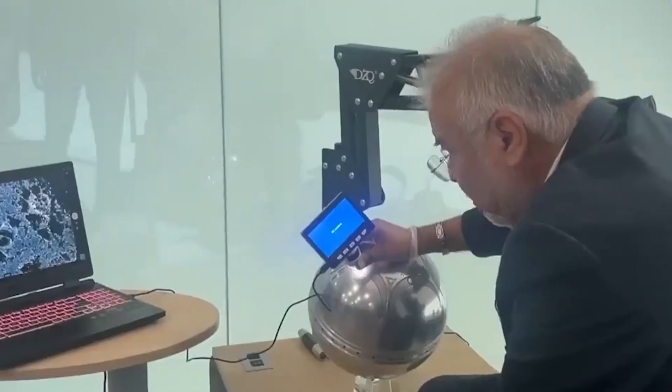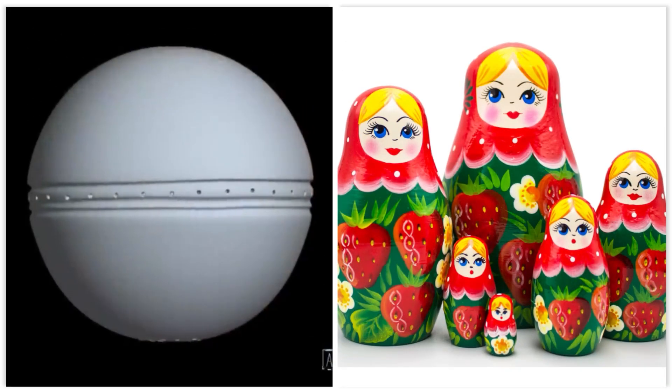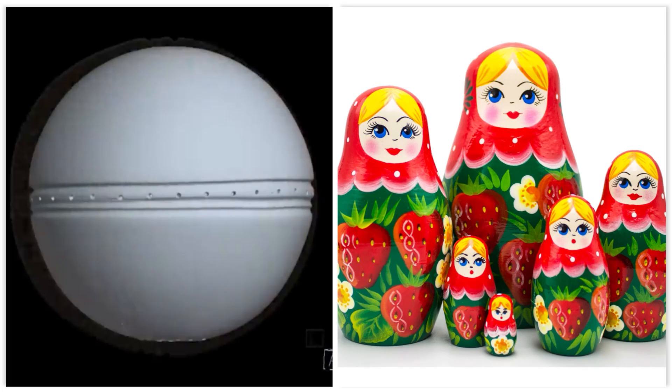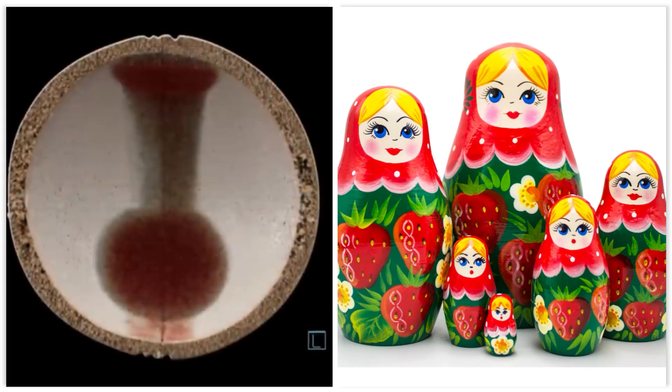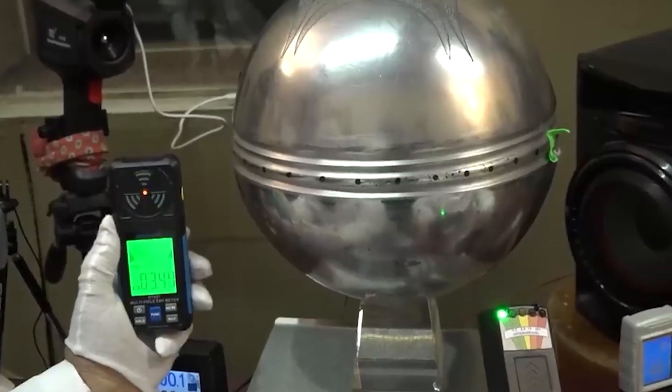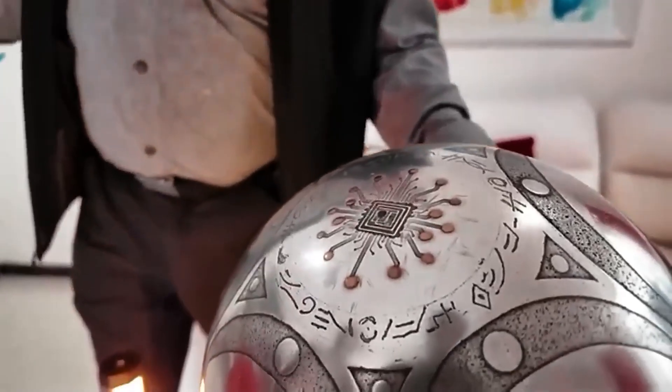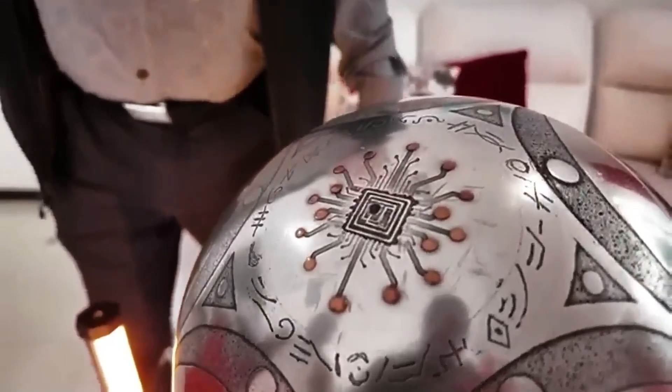But the scans revealed something even weirder. Inside the outer shell were two more shells, nested perfectly like Russian dolls. Between these layers floated nine tiny microspheres, held in place by no visible force. And at the very core, a microscopic chip that defied every analysis.